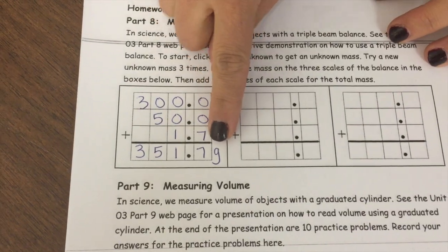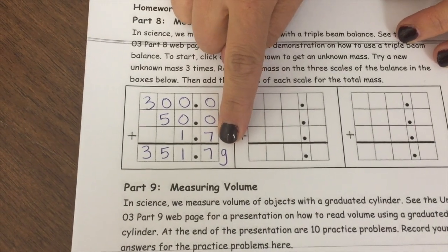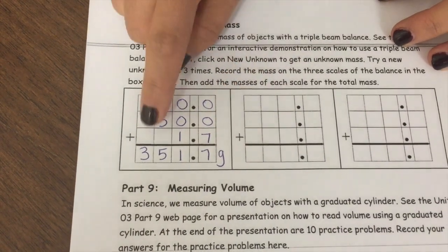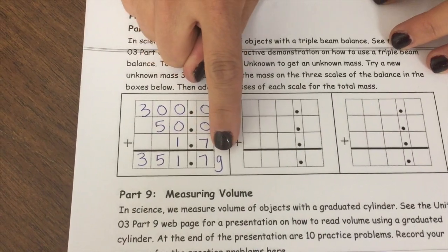It's important to make sure that you write a unit at the end. So right now we're measuring in grams. So it's 351.7 grams.